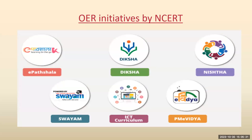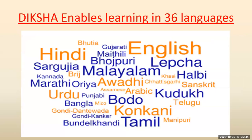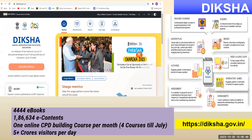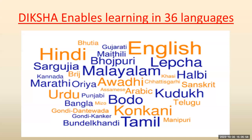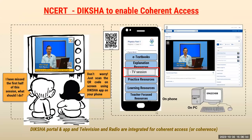NCRT has E-Batshala, Diksha, Nishtha, Swayam, ICT curriculum, and PM e-Vidya. All these are pointing out towards OER examples. You can see 444 e-books are there, and you can see how much e-content is there in Diksha. Diksha enables learning in 36 languages. NCRT Diksha enables coherent access.